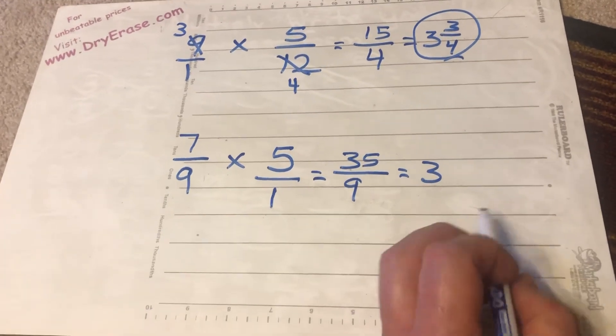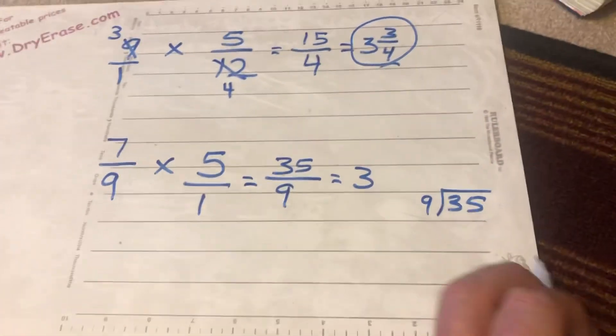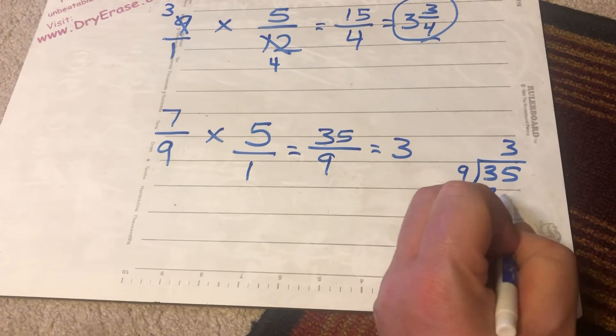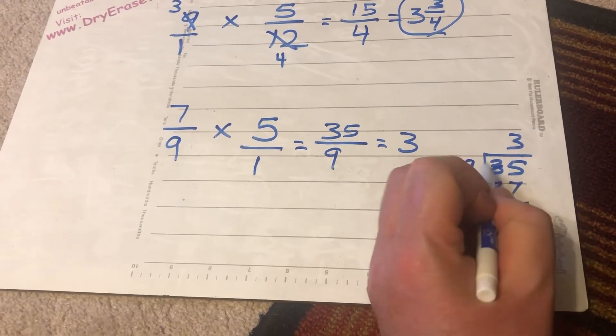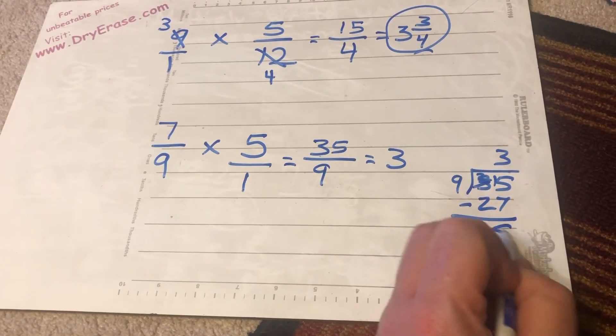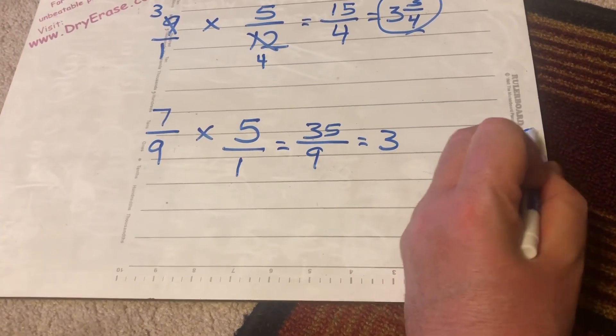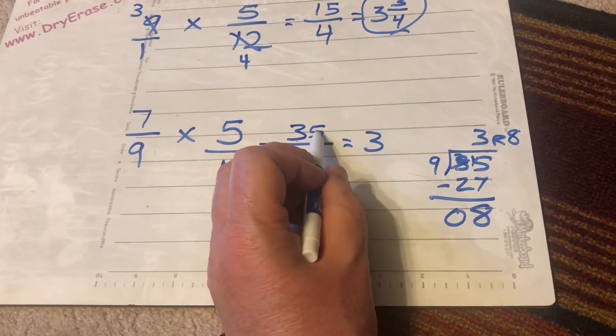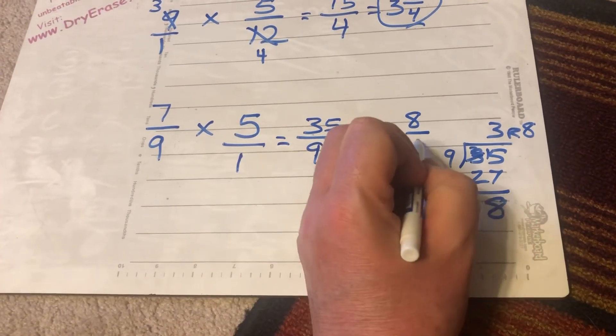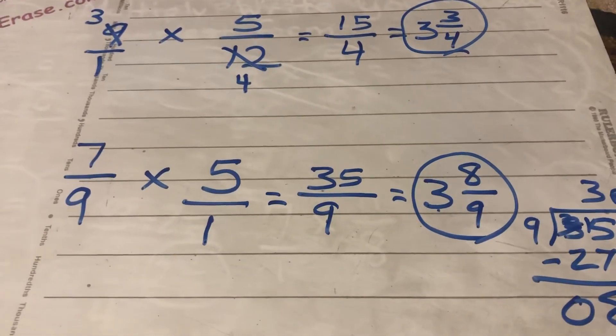And if I actually did the division problem 9 into 35, some of you may find that advantageous. 9 can go into 35 three times. 3 times 9 is 27. I can't do 5 minus 7. Borrow from the 3, make it a 2, make the 5 a 15. 15 minus 7 is 8, 2 minus 2 is 0. I get 3 remainder 8. 9 can go into 35 three times. There are 8 left over. My denominator here is 9, so my denominator there is 9. I end up with 3 and 8 ninths. Alright.